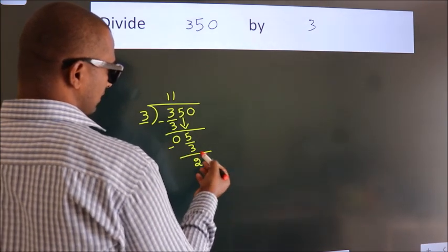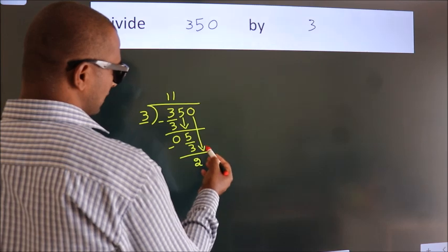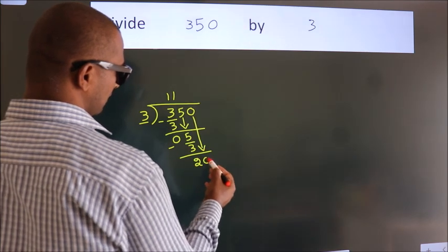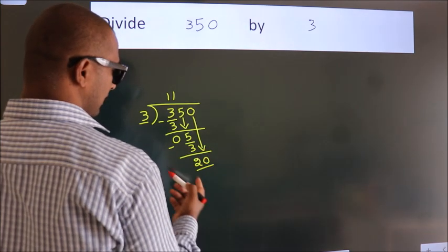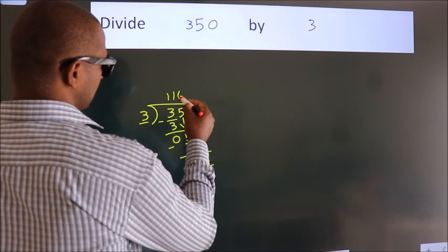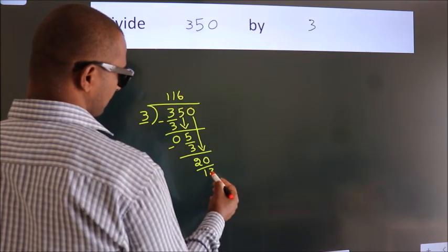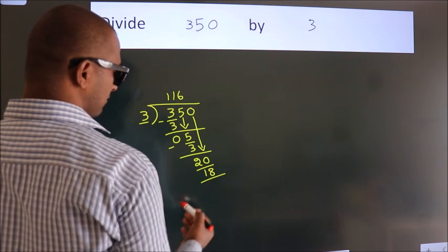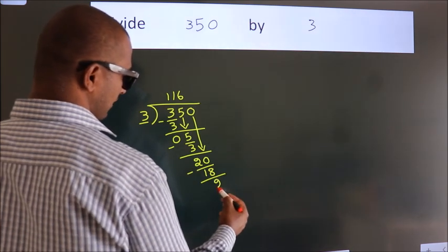After this, bring down the beside number, so 0 down, so 20. A number close to 20 in 3 table is 3, 6, 18. Now, we subtract, we get 2.